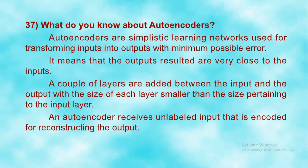Auto encoders are simplistic learning networks used for transforming inputs into outputs with minimum possible error. It means that the output results are very close to the inputs. A couple of layers are added between the input and the output, with the size of each layer smaller than the input layer. An auto encoder receives unlabeled input that is encoded for reconstructing the output.